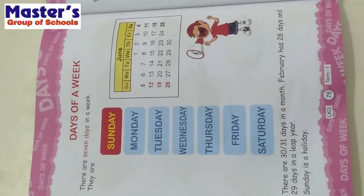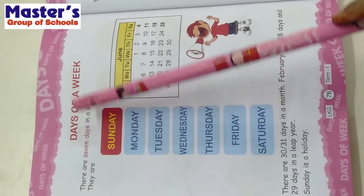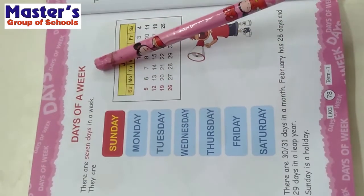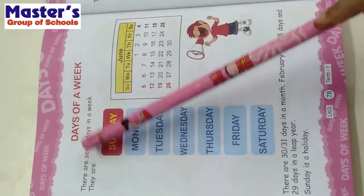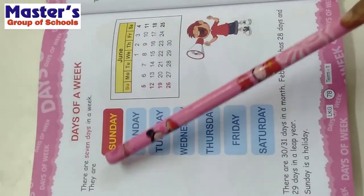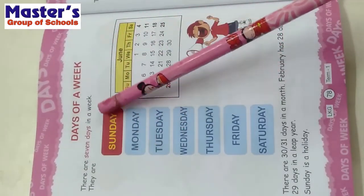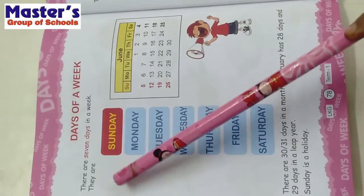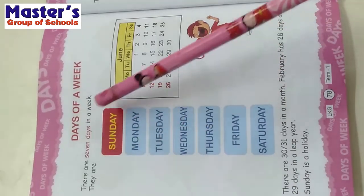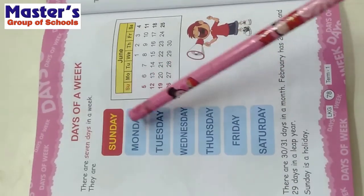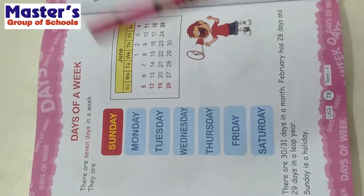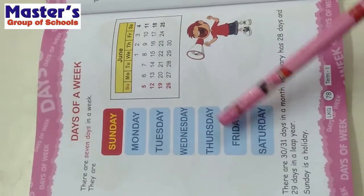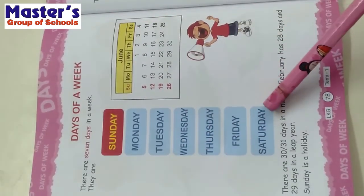Good morning children. Now we will learn days of a week. There are 7 days in a week. There are Sunday, Monday, Tuesday, Wednesday, Thursday, Friday and Saturday.